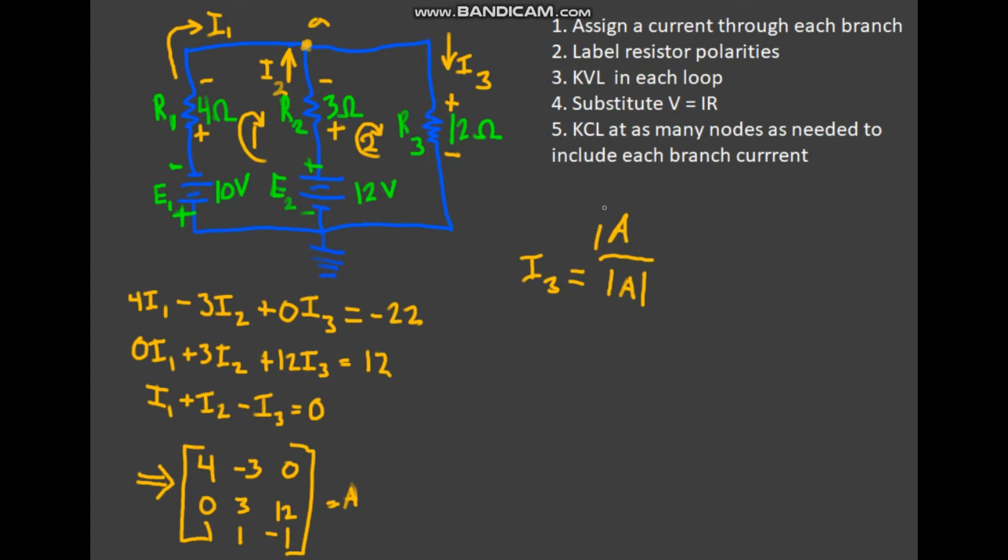We need to take the determinant of A in the denominator, and in the numerator we need to take the determinant of A with column three being replaced with, they call this B, the actual numbers on the right-hand side. So let's call that A₃. We're going to replace column three with our results, our numbers on the right-hand side if we want to solve for current three.